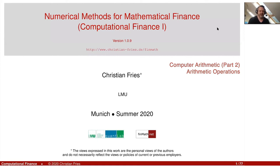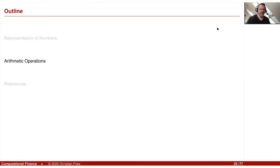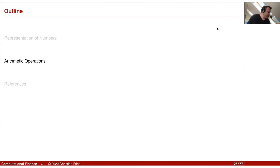Welcome to our next session in the lecture Numerical Methods for Mathematical Finance. We already had one session on computer arithmetic, where we looked at how numbers are represented in the computer, especially the floating point numbers — the normalized and denormalized floating point numbers discretizing the set of real numbers. Today I'd like to talk about having arithmetic operations on these numbers. The input are two floating point numbers, and then we have some function applied to them.